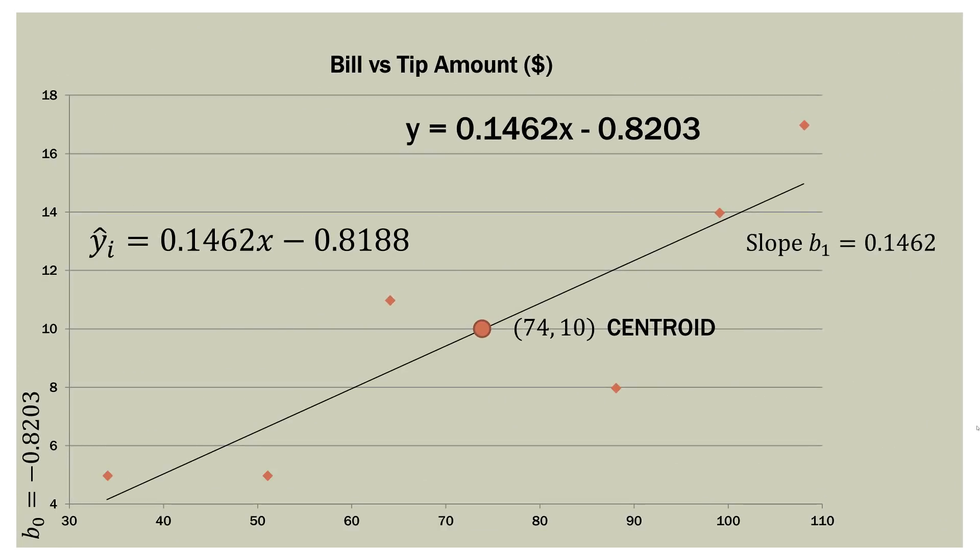So this is the model we get when we perform our analysis. You can see our regression equation, which is y or y-hat equals 0.1462x minus 0.8188. So that means that our slope, or b sub one, is 0.1462, and then of course our intercept is 0.8188. When you do some rounding, it might be a little bit different depending on what software you use, but it's basically the same thing.